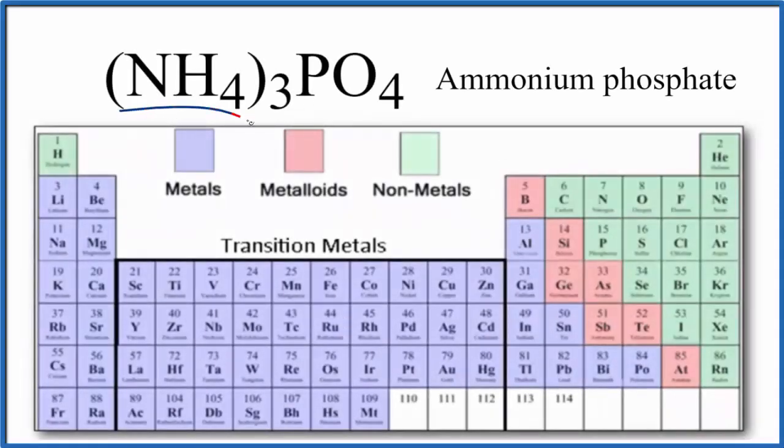In this video, we'll look at whether NH43PO4 is ionic or covalent. This is ammonium phosphate. This is a little bit tricky.